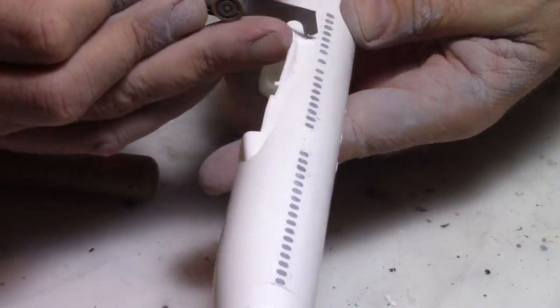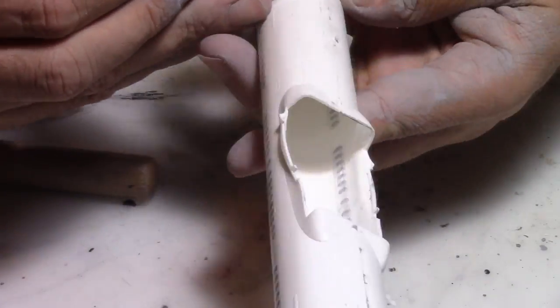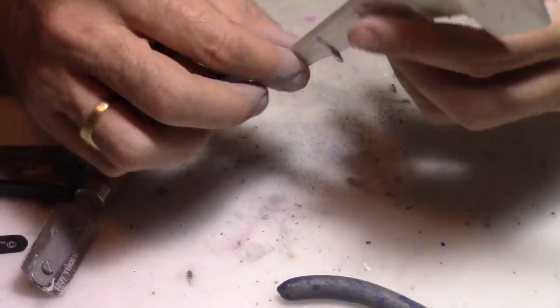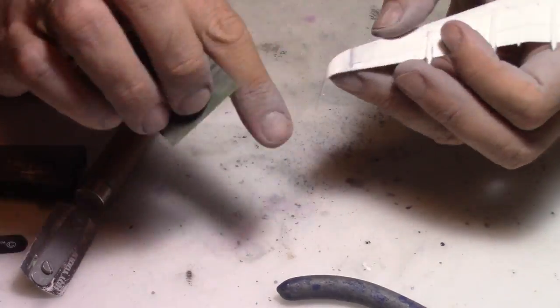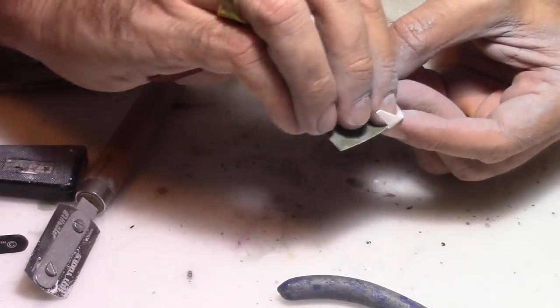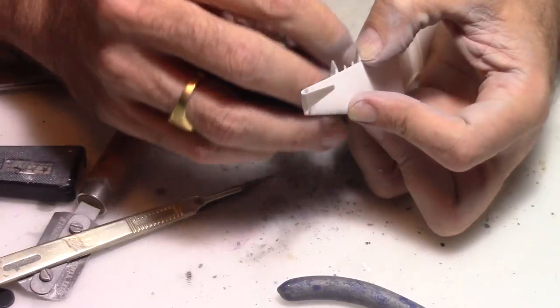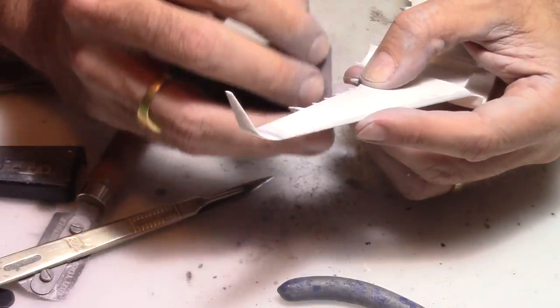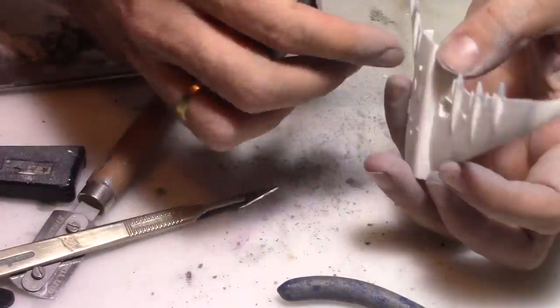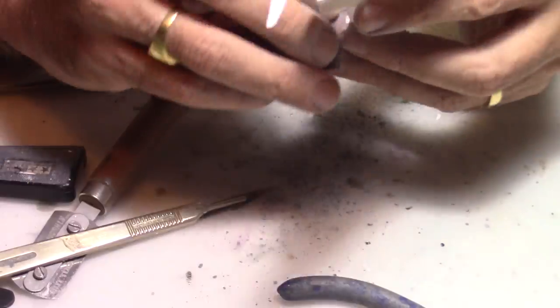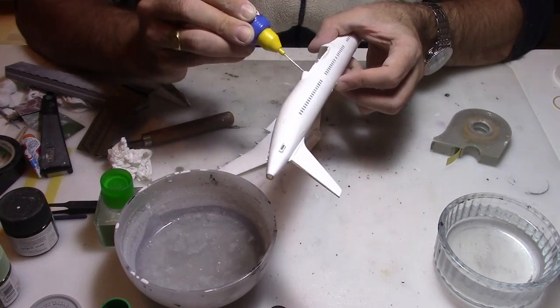Once the sanding was completed, it was time to re-scribe some of the panel lines as they were filled up with putty during the process. After that we're moving on to the wings. I had some issues getting the proper shape on the flaps fairing—they weren't at the proper eye shape, so I had to do a lot of filling and sanding. I really prefer the ones I had on the earlier Revell Airbuses.